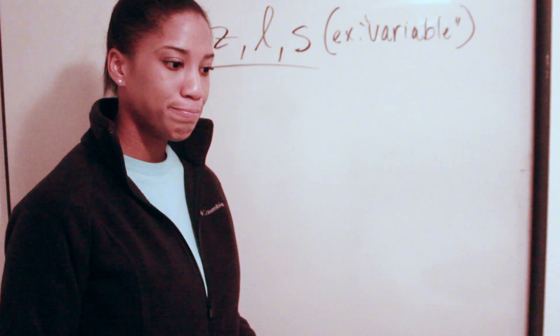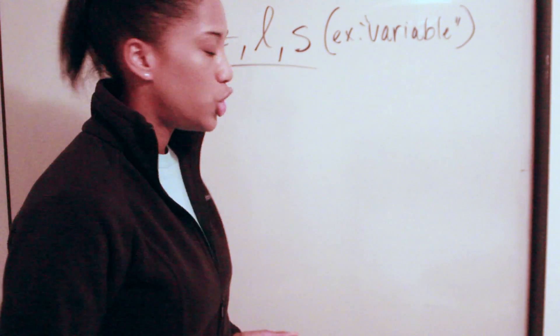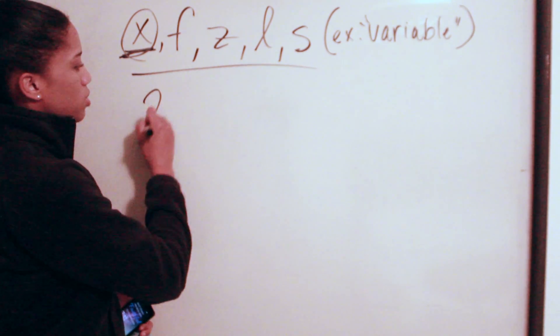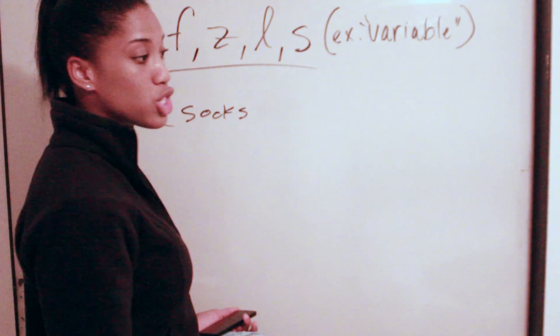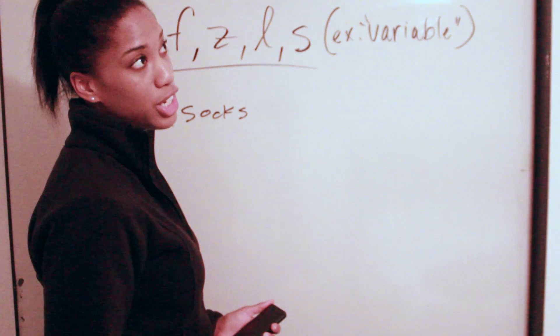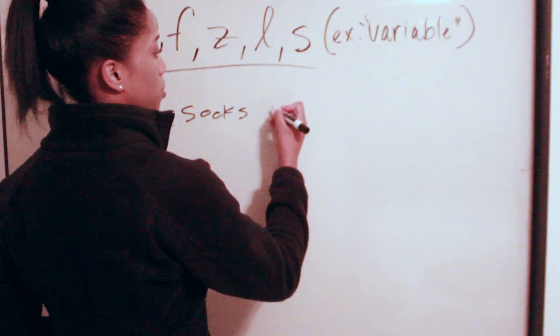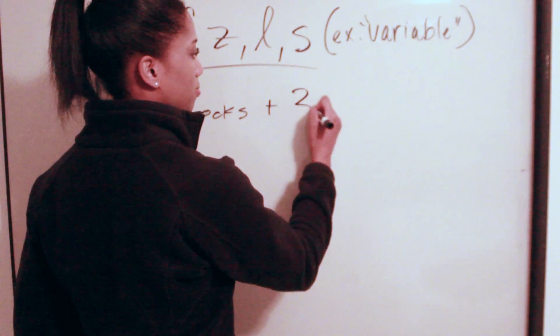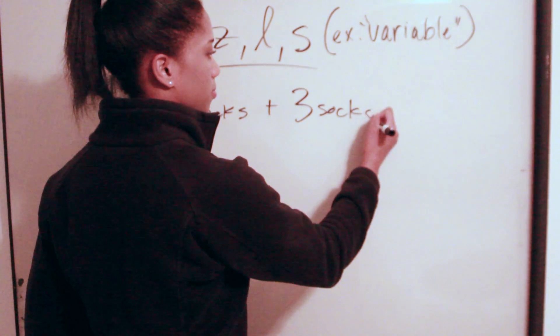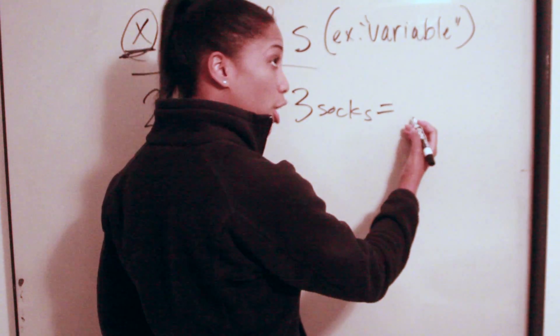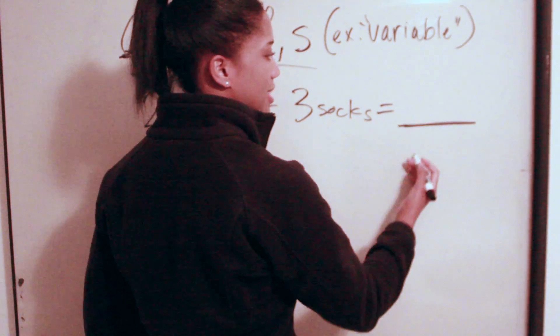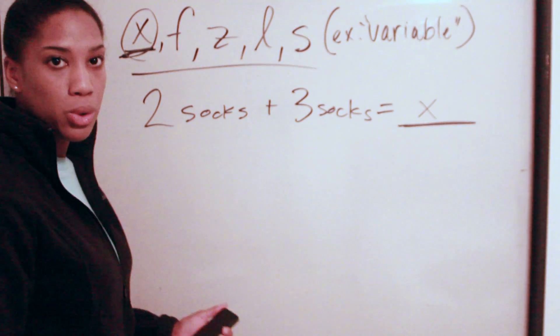Now what a variable represents is, let's say for instance, if you have Johnny who has two socks, and he would like to add an additional three socks. So the variable would be: how many socks would Johnny have in total if he added three socks?